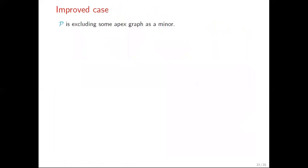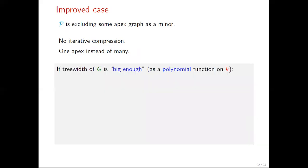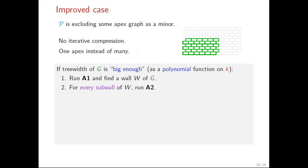Now, in the special case where our target class excludes some apex graph as a minor, we use a slightly different approach. We can avoid using iterative compression and save a linear factor in n in the running time. This, as we will see, is an advantage we have because P excludes a graph with one apex instead of many apices in the general case. So, the algorithm does the following. As long as the treewidth of G is big enough, we begin by running algorithm A1 and we find a wall W of G. Then, for every possible sub-wall of W, we run algorithm A2. If it outputs a flat wall, we then run A3 and find an irrelevant vertex. We remove this vertex from G and repeat the whole procedure.